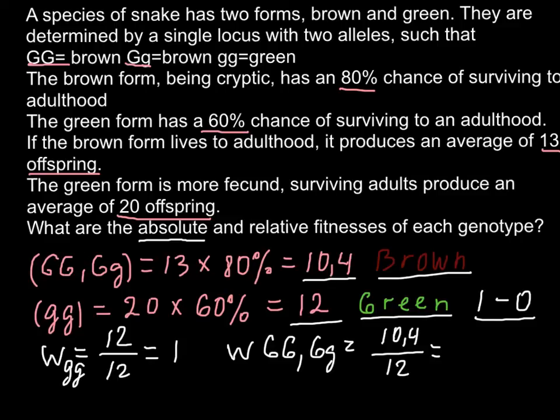And the answer here would be 0.87. So this is going to be the answer for the green phenotype, and this is going to be the relative fitness of the brown phenotype.